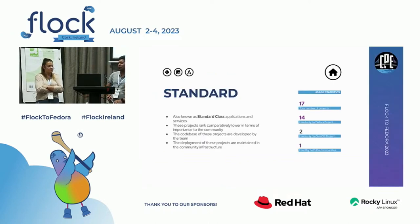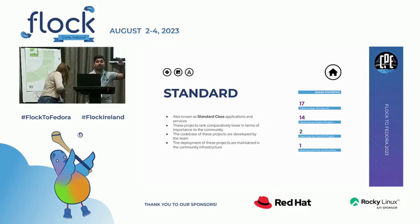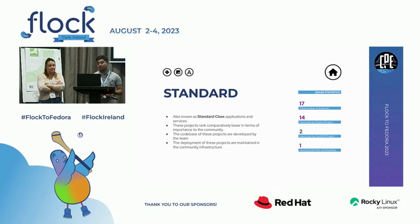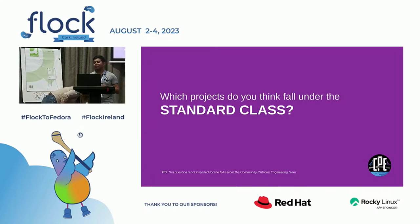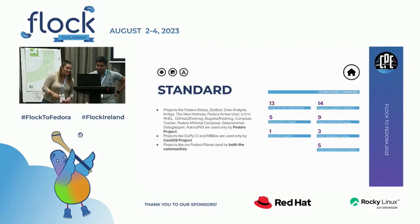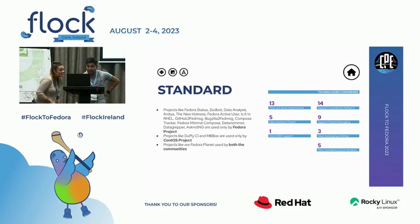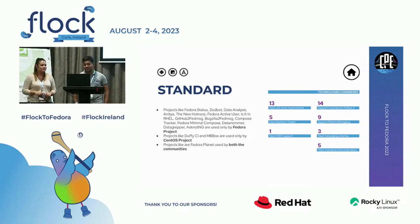The standard applications are ones the team writes the code base for and maintains in infrastructure, but they are not as important as critical class one or two. There are 17 projects in total: 14 used by Fedora project, two by CentOS project, and one used by both. An audience member guesses FMN — let's find out. FMN is indeed not in the standard category list.